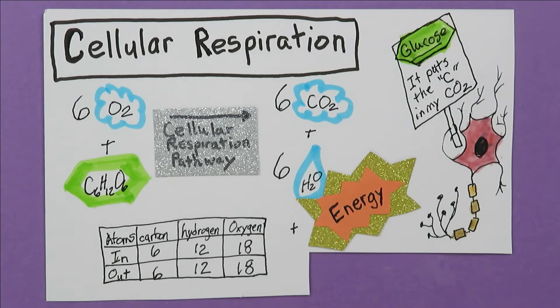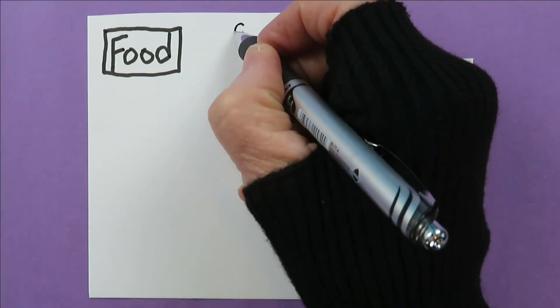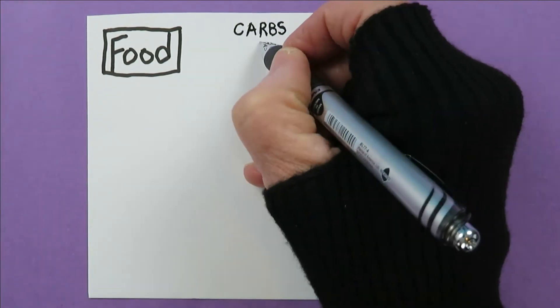So, where did the glucose come from? Well, that's an interesting story. Glucose and other carbohydrates, or carbs, are in your food, even if you've never ordered the glucose blue plate special at a diner.